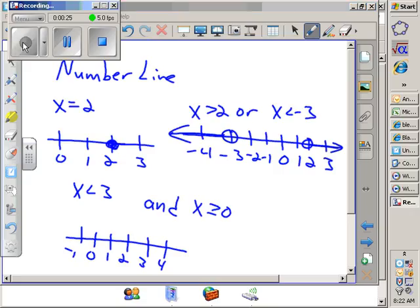Last one, how do I graph x is less than 3 and x is greater than or equal to 0? x is greater than or equal to 0. Closed dot at 0, arrow going to the right. Open circle at 3, arrow going to the left. This is where my answer is, inside of the closed circle and the open circle.